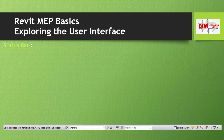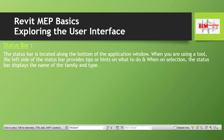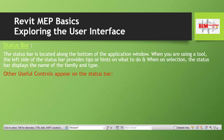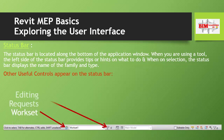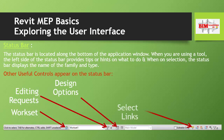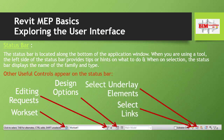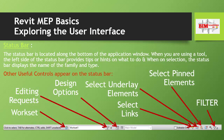Now let's discuss the Status Bar. The Status Bar is located along the bottom of the application window. When you are using a tool, the left side of the Status Bar provides tips or hints on what to do. On selection, the Status Bar displays the name of the family and type. The Status Bar also contains: Worksets, Design Options, Select Links, Select Underlay Elements, and Filter.